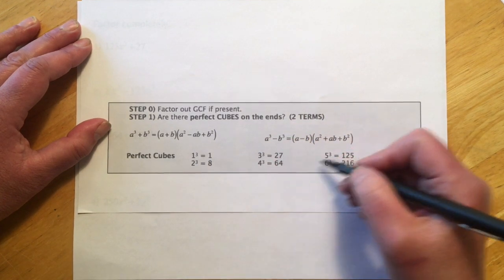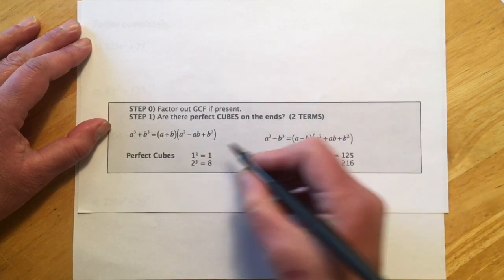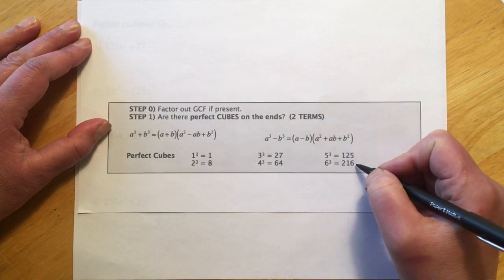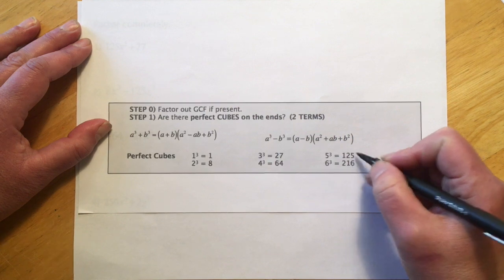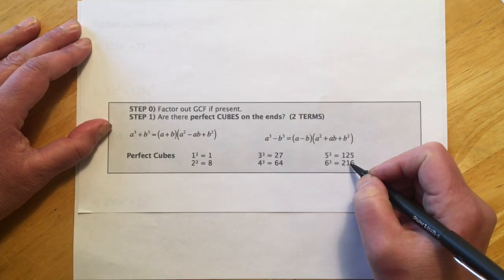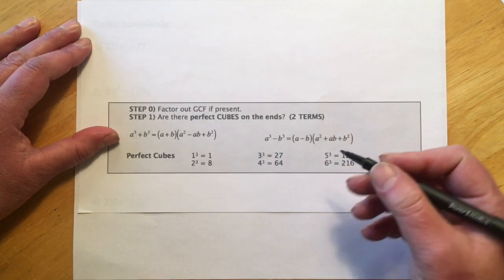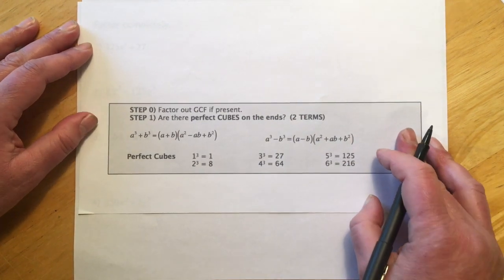Same as the last section, here's a list of the common cubes you're going to run into. So you're going to see numbers like 1, 8, 27, 64, 125, 216, probably nothing bigger than that. And it's going to break down to the numbers on the other side, just like in the last section with special products.